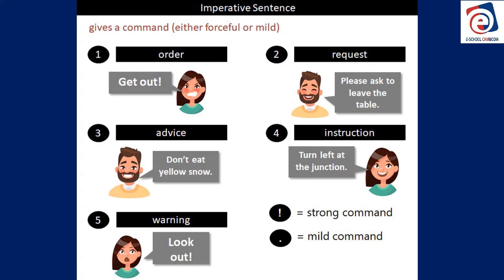Number three, an imperative sentence can be advice. For example: 'Don't eat the yellow snow' — it's not giving information, it's not asking a question, but it's telling you to do something. 'Don't eat that food, it's not good.' 'Don't eat that food, you will get sick.' So that is giving advice, but still telling us to do something.